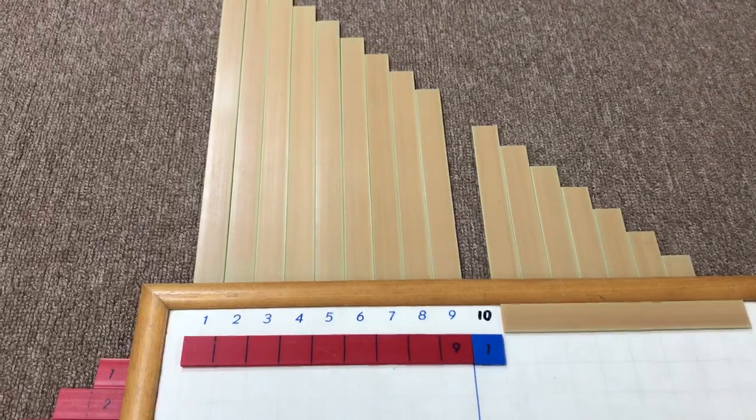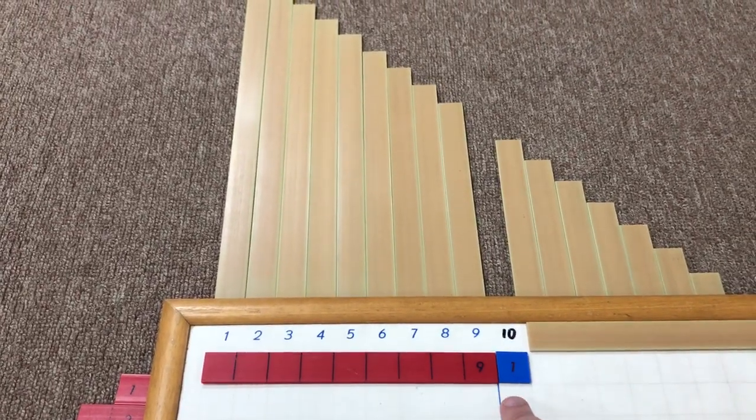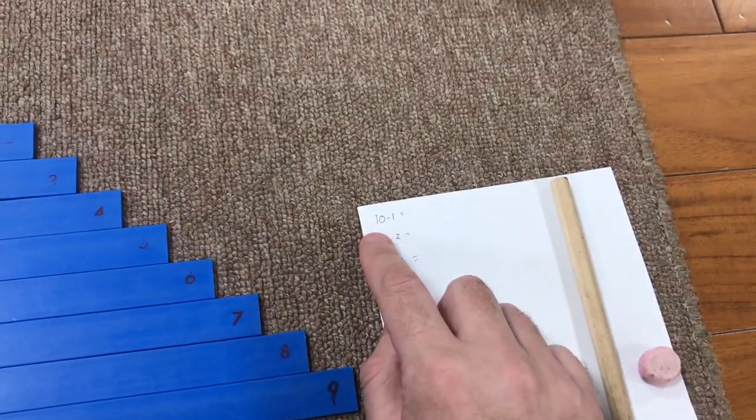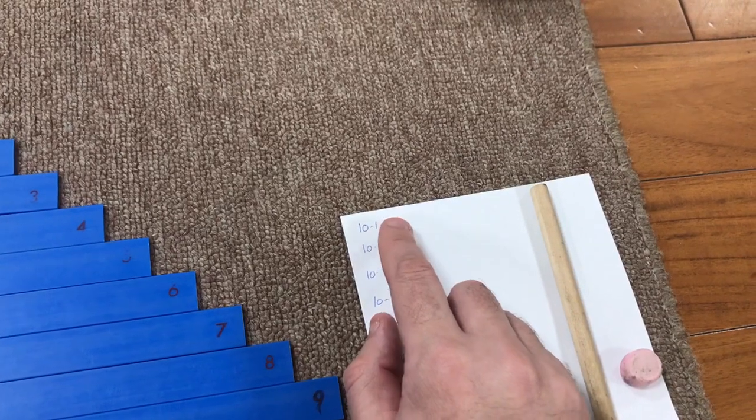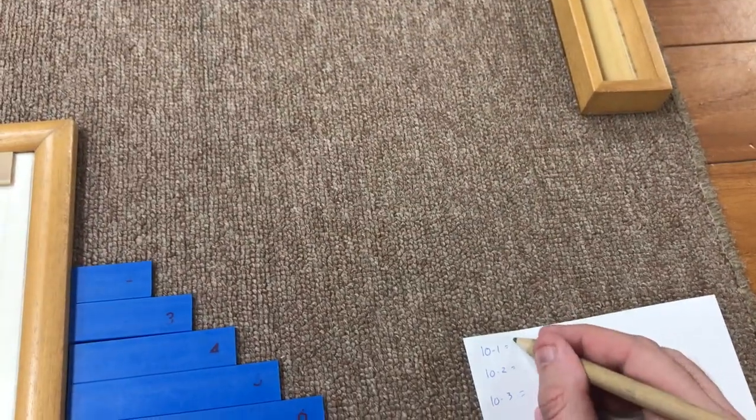So now we can point to the child. 10 minus 1 equals 9. And I go back to here. 10 minus 1 equals, the child will usually say 9. So we'll put 9 in here.